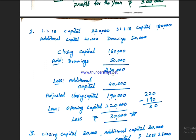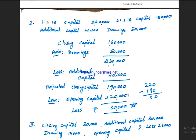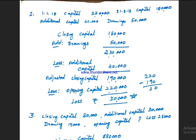Adding drawings of 50,000 to closing capital gives 2,30,000. Deducting additional capital of 40,000 gives adjusted closing capital of 1,90,000. Deducting opening capital of 2,20,000 gives minus 30,000. This is a loss of 30,000. So Exercise 1 shows profit and Exercise 2 shows a loss.